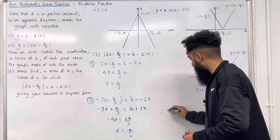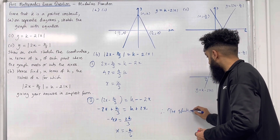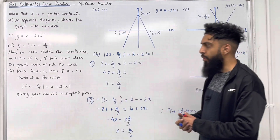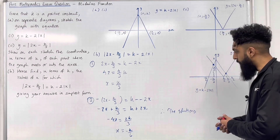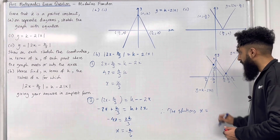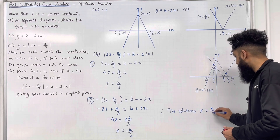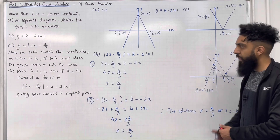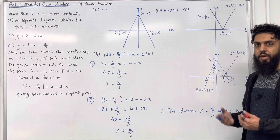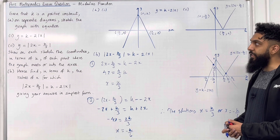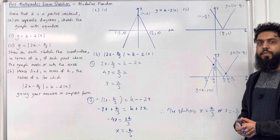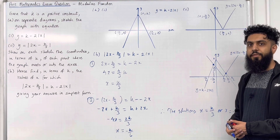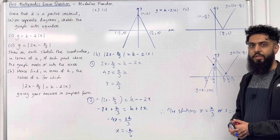Therefore, the solutions to |2x − k/3| = k − 2|x| are x = k/3 or x = −k/6. Ladies and gents, this completes part B of the exam question and this teaching video on Pure Mathematics exam questions on modulus function. If you found this useful, please subscribe, leave a like, leave a comment, and turn on your notification bell so you receive notifications every time I post a new teaching video. See you in the next video.